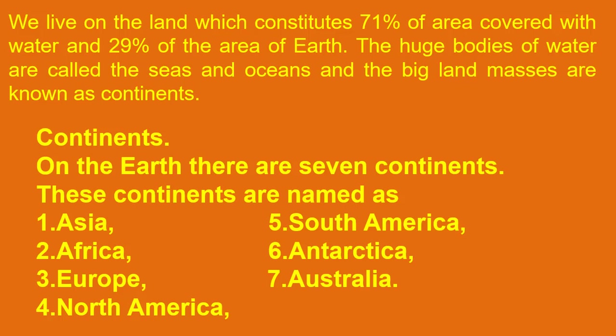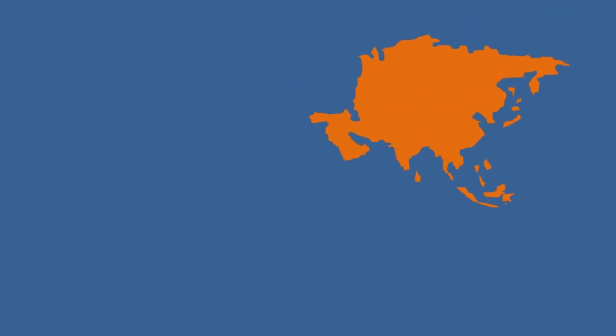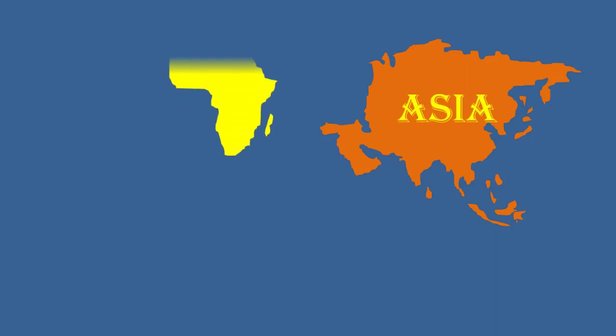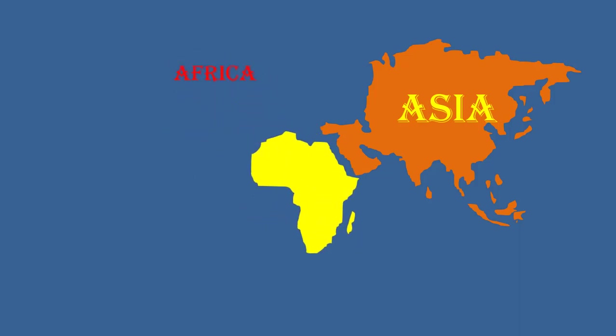The big land masses are known as continents. On the earth there are seven continents. These continents are named as Asia, Africa, Europe, North America, South America, Antarctica, and Australia. Let me show them on the world map one by one. First, this is Asia, and this is Africa.